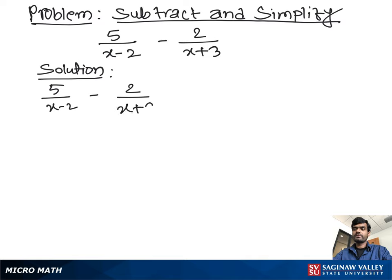First, we have to identify: do both terms have the same denominator or different? As you see, both terms have different denominators. One has x minus 2, the other has x plus 3. Now our first job is to make each term's denominator the same.